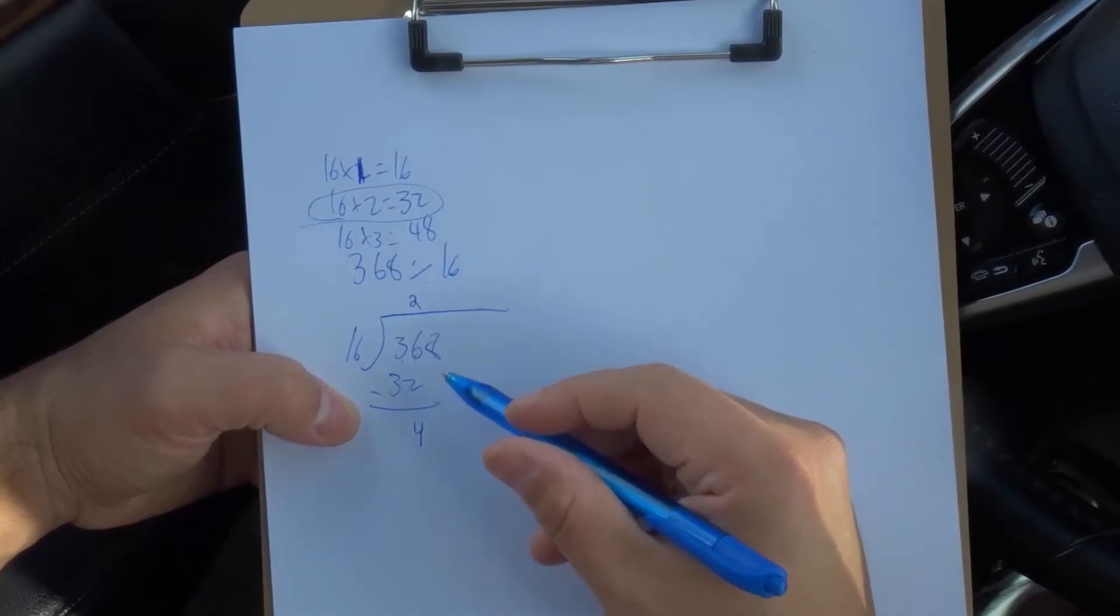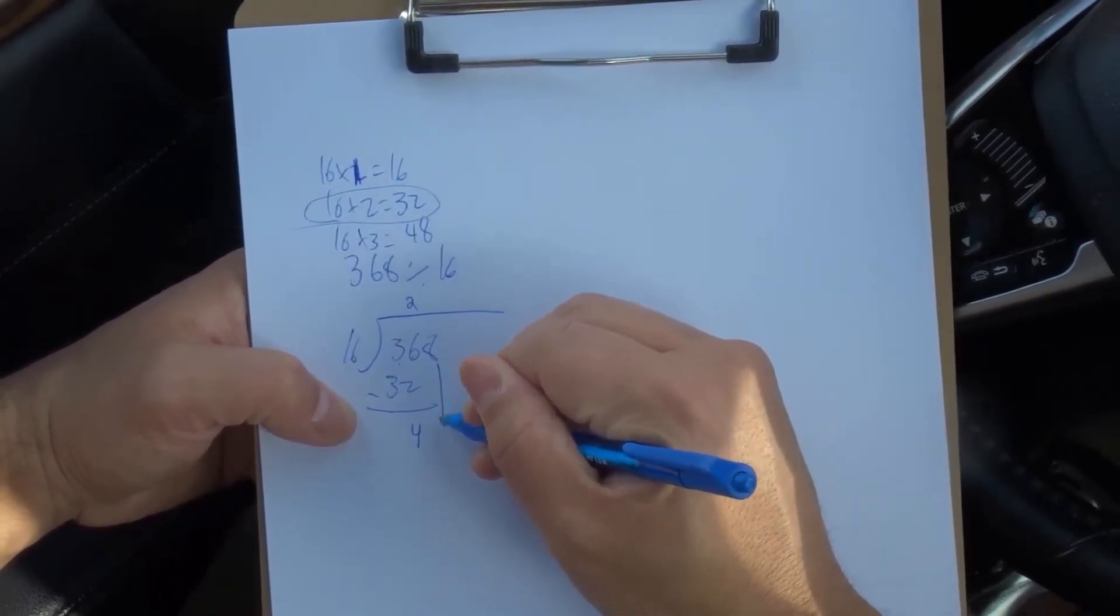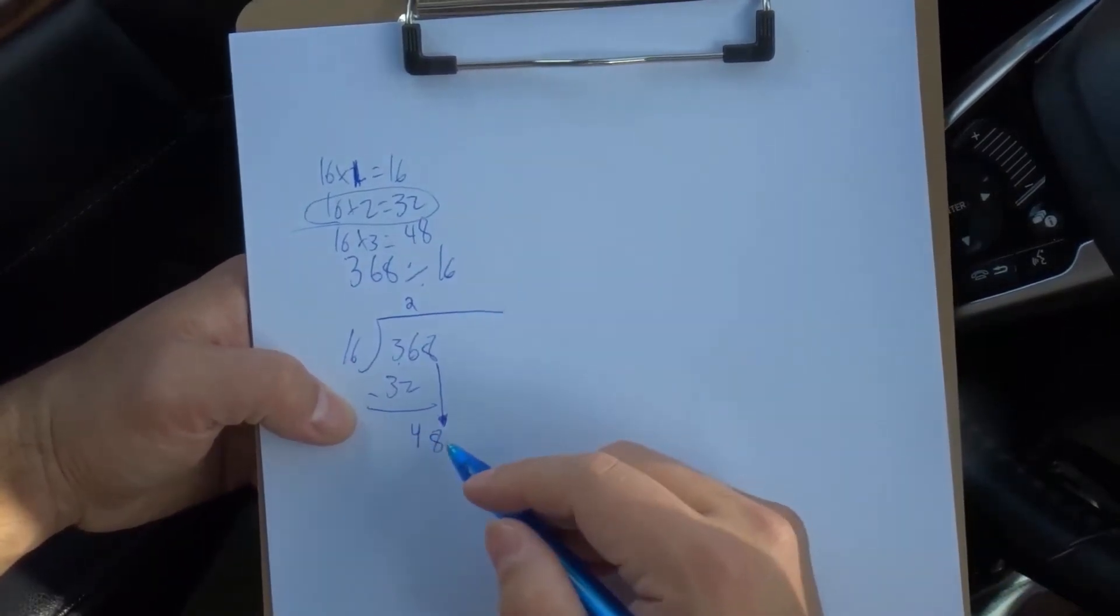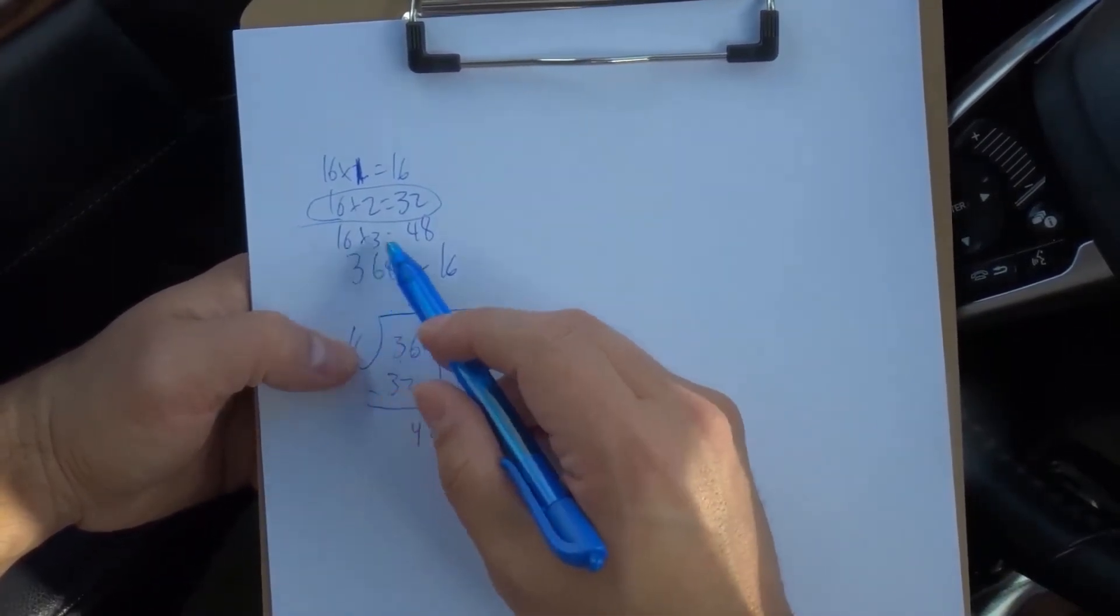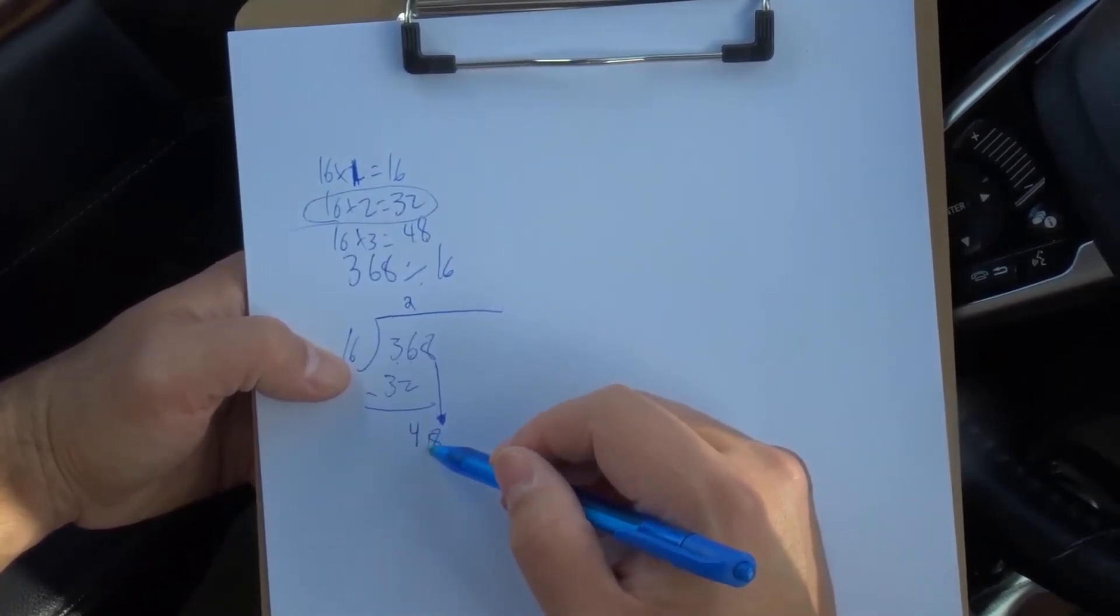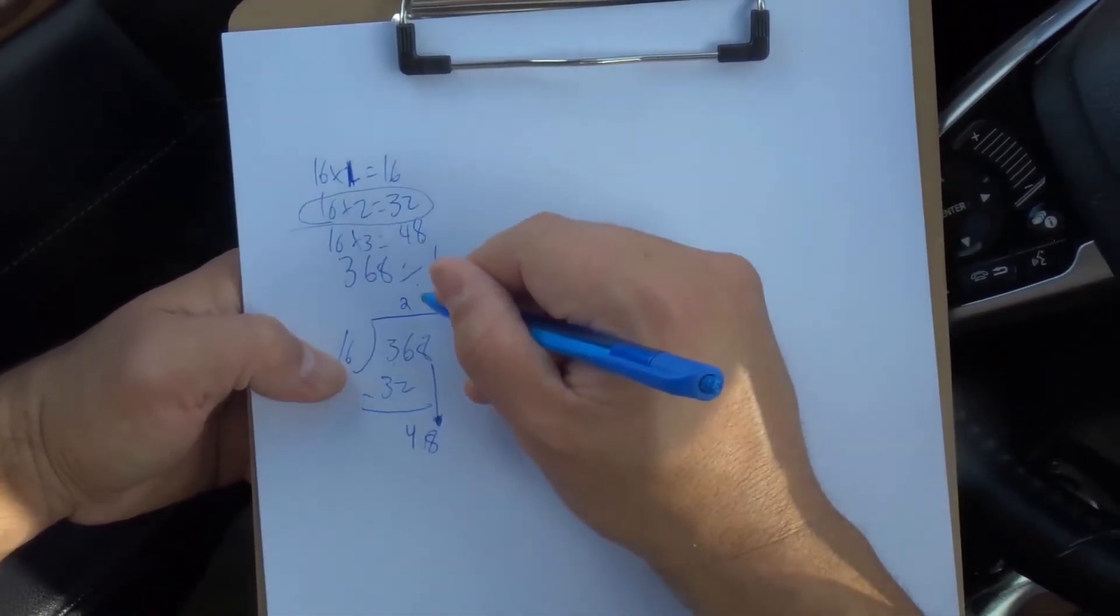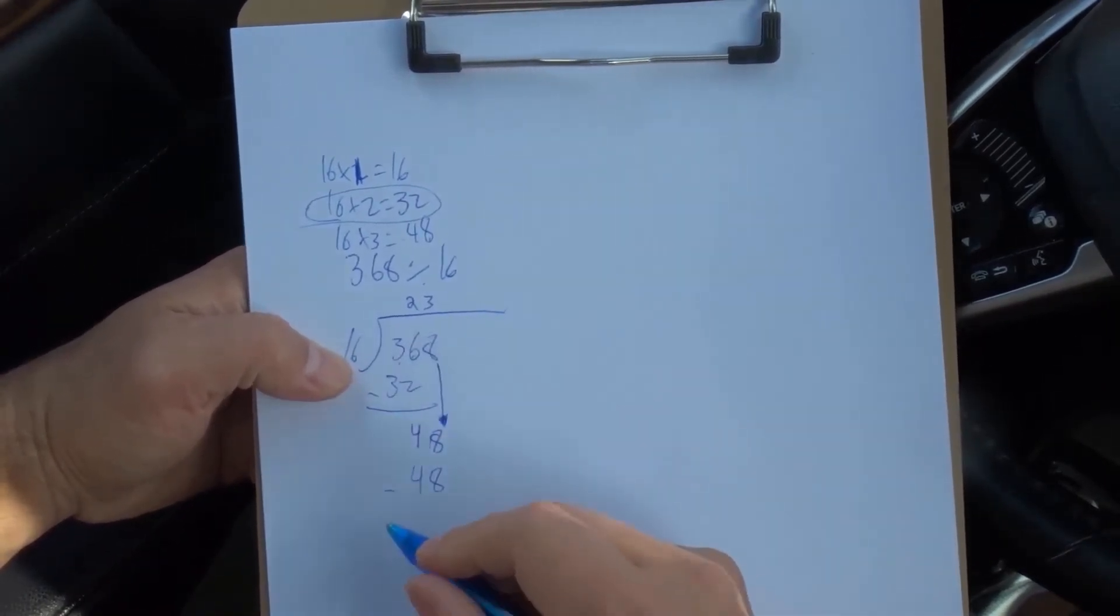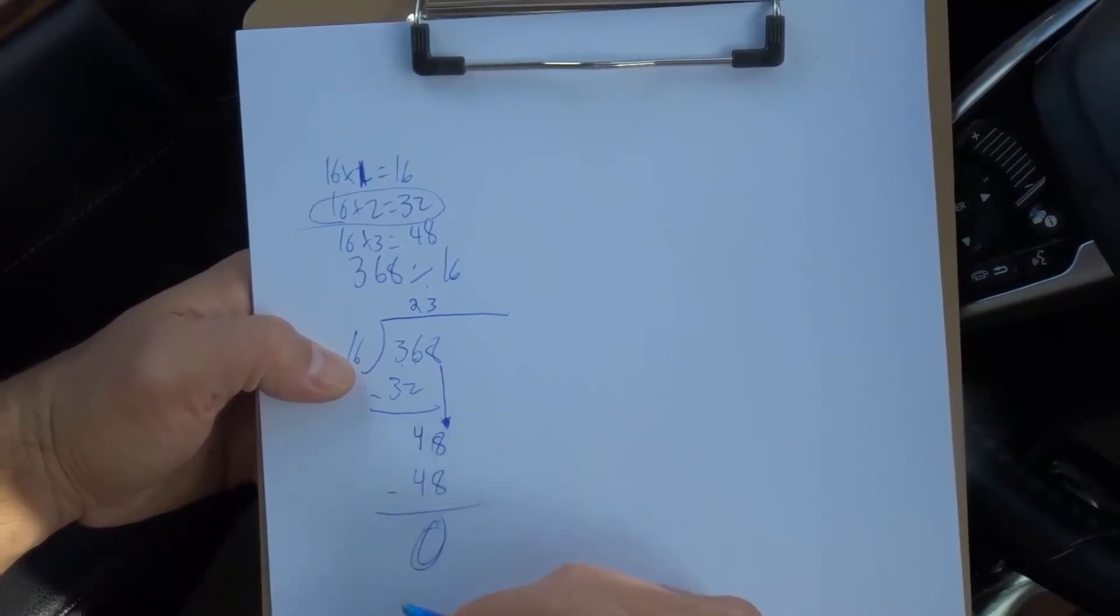What we're going to do is take the remaining number, bring it down beside the 4, which is an 8. So now we have 48. We already know that 16 times 3 is 48. So we're going to write down 48 and subtract it. 48 minus 48 is 0. So there's 0 remainder.